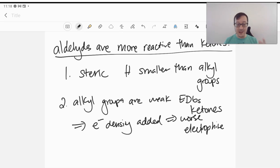Because the alkyl groups, ketones have those. Aldehydes may have just one, but ketones have to have two. So because of those two reasons, aldehydes are going to be more reactive as electrophiles.